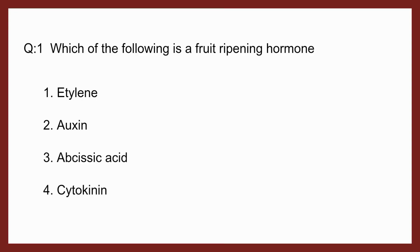The first question is which of the following is a fruit ripening hormone? Options are ethylene, auxin, abscisic acid, cytokinin. We know ethylene is a fruit ripening hormone. The correct option is ethylene, because auxin is a promoter of root formation, abscisic acid is an inhibitor, and cytokinin promotes shoot development.